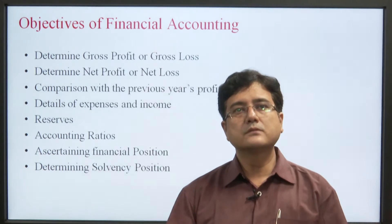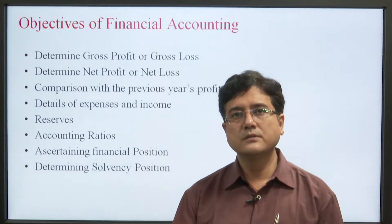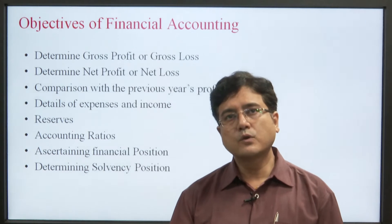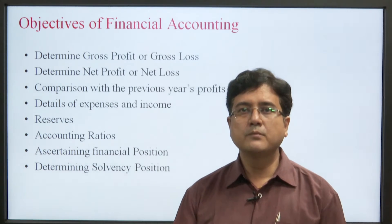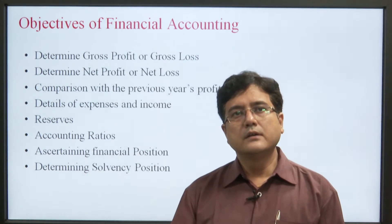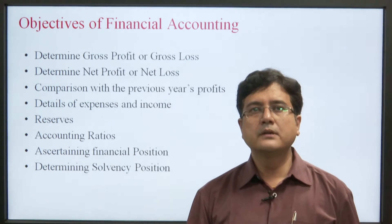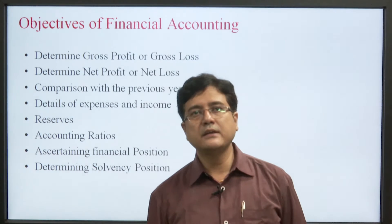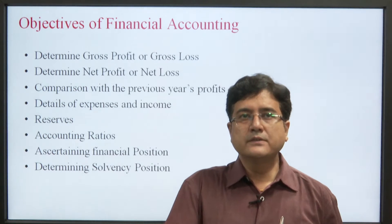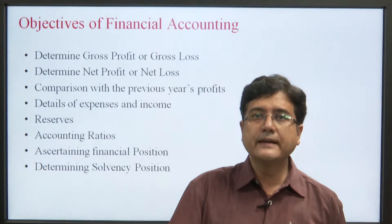There are several objectives of financial accounting. The first is to determine gross profit or gross loss — from financial accounting, we can calculate gross profit and gross loss, which is found with the help of the trading account. When we prepare the profit and loss account, we are able to calculate the net profit. So the first objective is to determine gross profit or gross loss, and the second objective is to determine net profit or net loss.